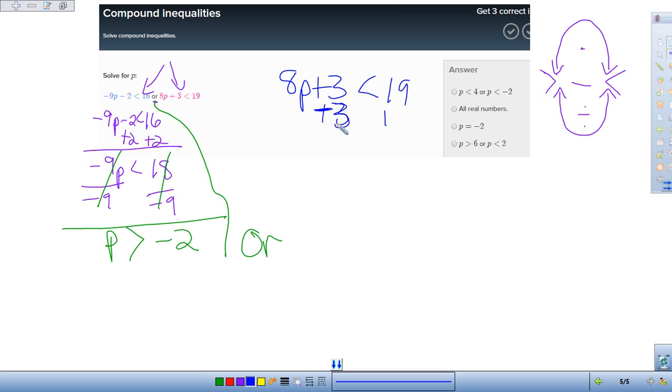So now if I add 3 to both... Oops, I take away 3. Sorry, that's minus 3 from both sides. So minus 3 from both sides. So that this cancels. So 19 minus 3 is 16.